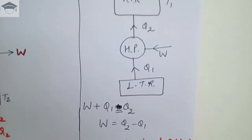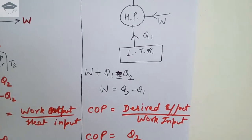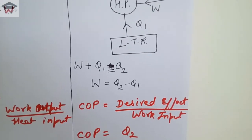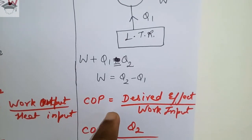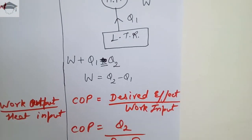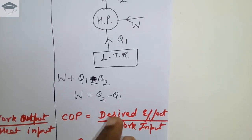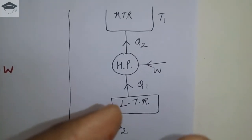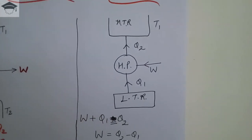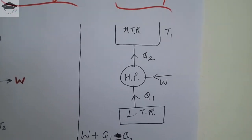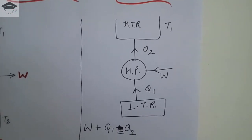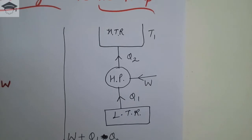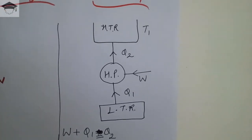So work done W is equal to Q2 minus Q1. For a heat pump and refrigerator, there is a term known as COP or coefficient of performance, used instead of efficiency. COP is equal to desired effect upon work input. The desired effect is what we require. For a heat pump, the device pumps heat — for example, in winter we require a heater to warm a place, so a heater is essentially a heat pump where we supply electrical energy as work input.